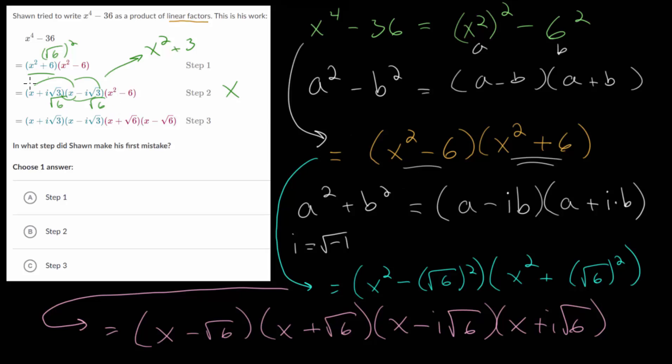And if this was correct, the next step would be to factor this into x plus root six times x minus root six, which is exactly what we have. So step three looks okay. And step one we know is okay. But step two, again, factoring this sum of squares, that's where he made the mistake. So it looks like choice letter B is the correct answer here.